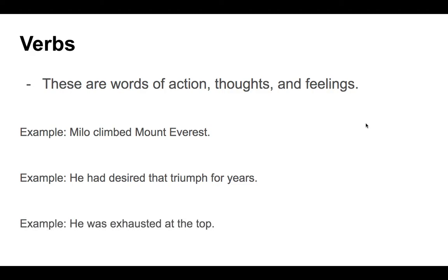Final example: 'He was exhausted at the top.' If you said 'was exhausted,' you'd be correct. These examples show that verbs usually come near the beginning of the sentence. Verbs and nouns are the two most important categories of words in English — together they can create a sentence on their own. We can also talk about this as subject and predicate. The subject is the person, place, or thing doing the action; the predicate is the action happening in the sentence. Subject and predicate — noun and verb — can make up a complete sentence.